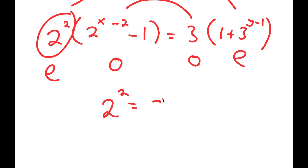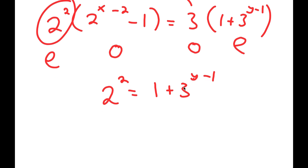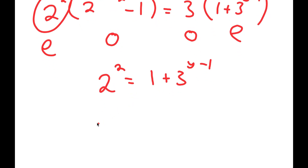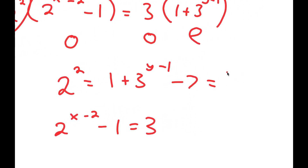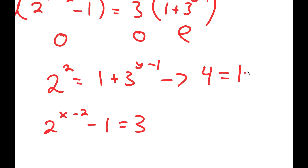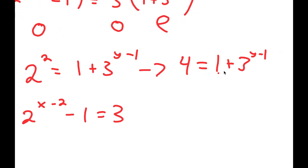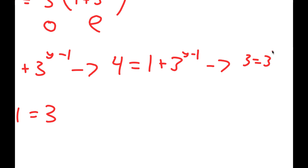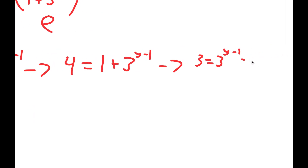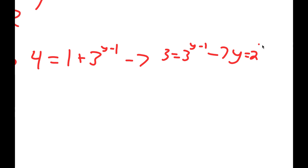From the even parts: 2 squared equals 1 plus 3 to the power of y minus 1. This gives 4 equals 1 plus 3 to the power of y minus 1, so 3 equals 3 to the power of y minus 1, meaning y minus 1 equals 1, so y equals 2.